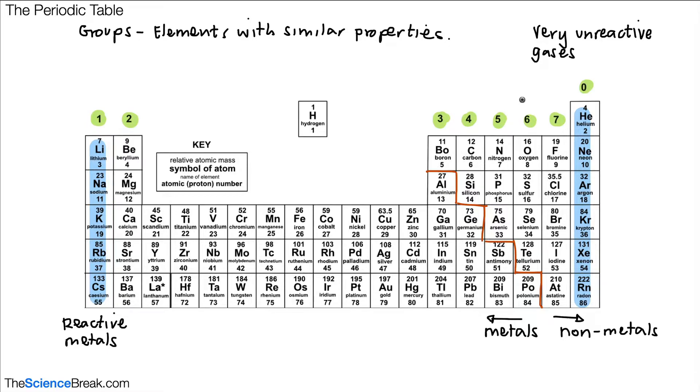Now in the center, between group 2 and 3, we have a big block of elements, and these are the transition metals. These are actually not found in groups because their properties can vary slightly.